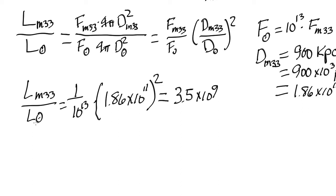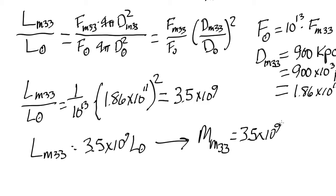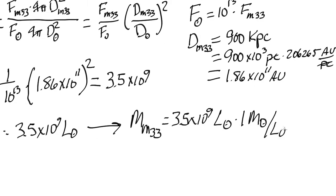If M33 were only made out of stars like our sun, we would have our answer. That answer would be that L M33 is equal to 3.5 times 10 to the 9 L sun. And that enables us to say that the mass of M33 is equal to 3.5 times 10 to the 9 L sun times that ratio of 1 M solar per L solar, or 3.5 times 10 to the 9 M solar.